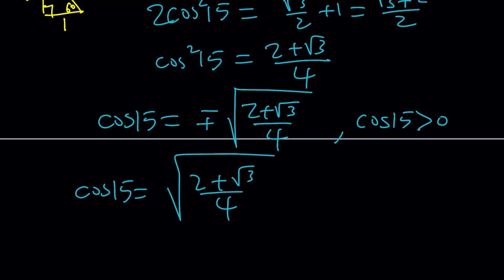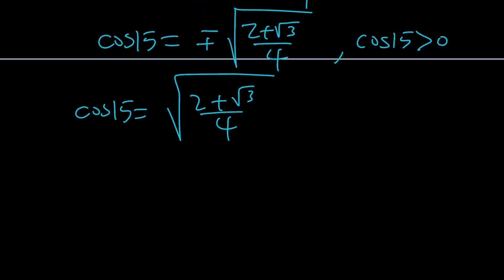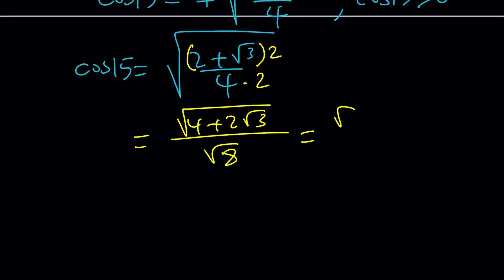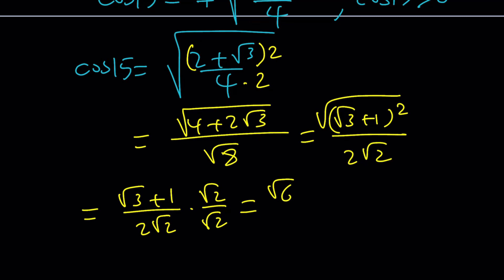Obviously, I can go ahead and take out the square root of 4, but I don't want to do that. I want to do something else which is going to be more fun. I want to multiply the top and the bottom by 2. And then you get the square root of 4 + 2√3 at the top, and at the bottom you get √8. Now, the top is basically √(√3 + 1)². So this is 2√2. And now we get (√3 + 1)/(2√2). And finally, when you multiply by √2/√2, you're going to get (√6 + √2)/4.